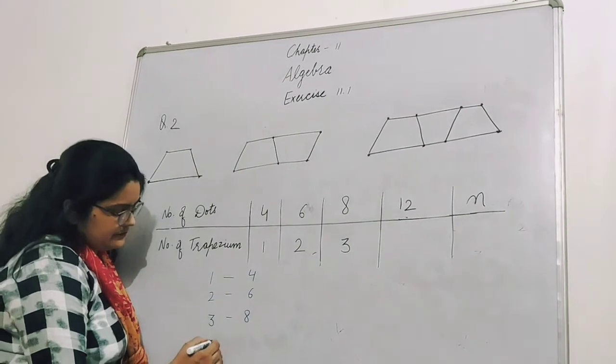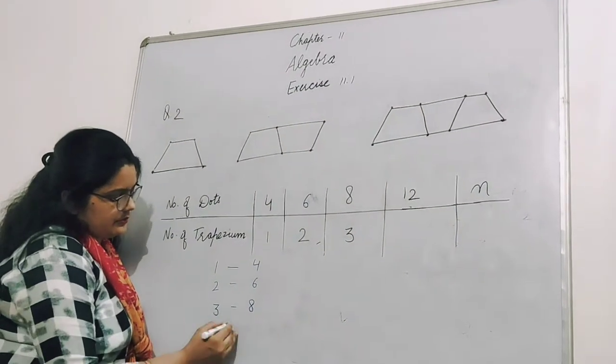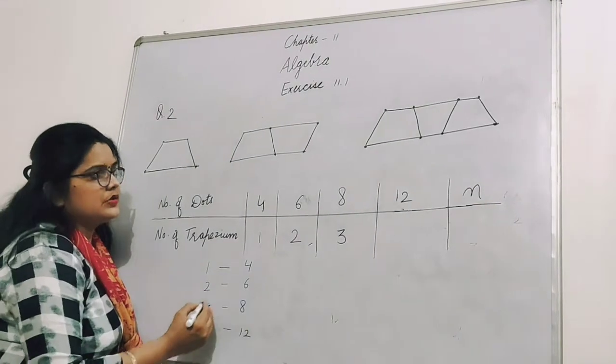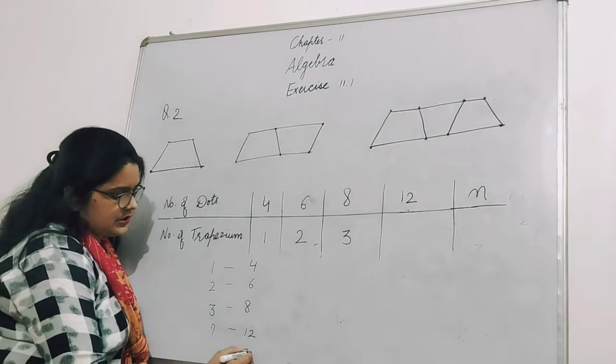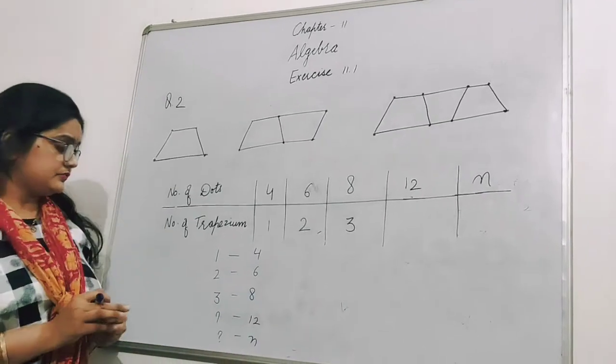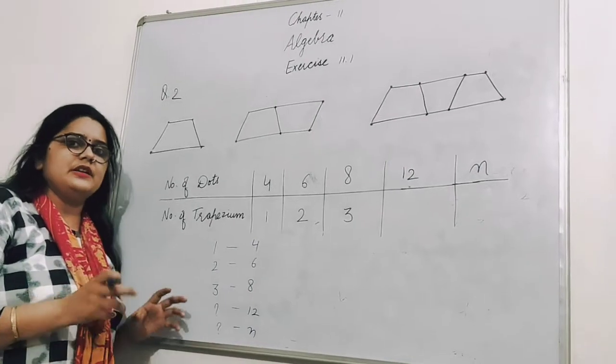Twelve dots - how many trapeziums? N dots - how many trapeziums? We have to find the general term. Between these, we have to find some relation.